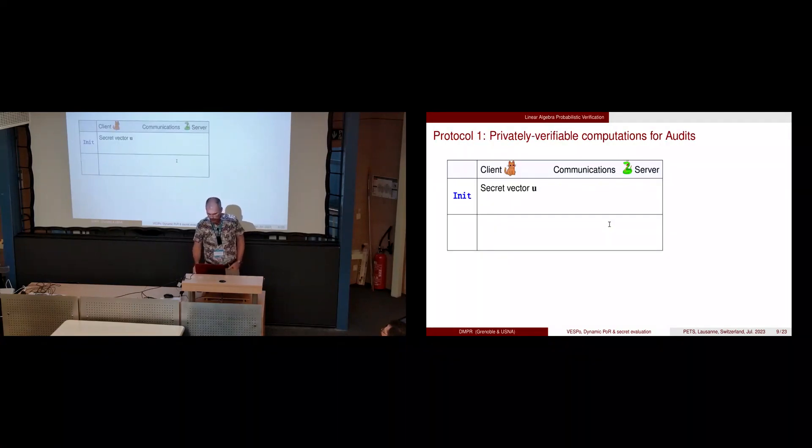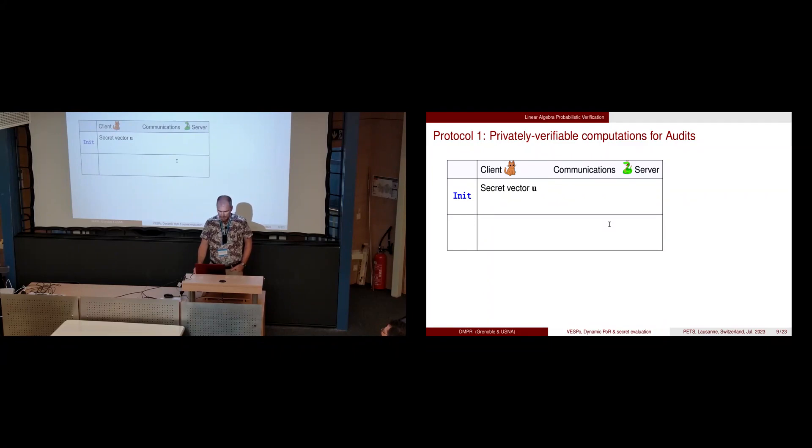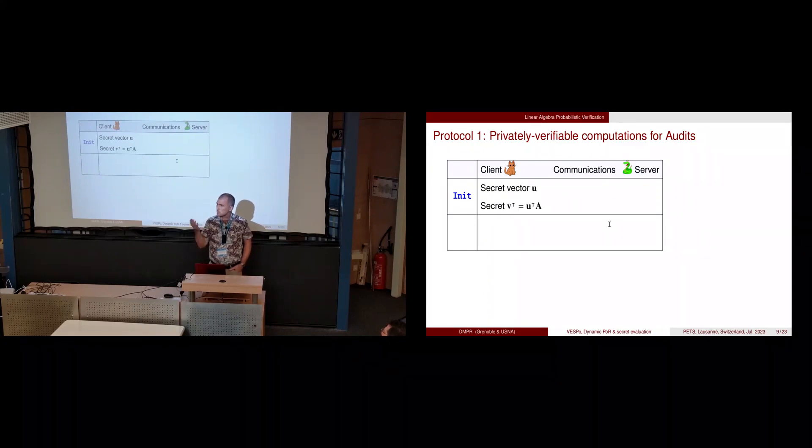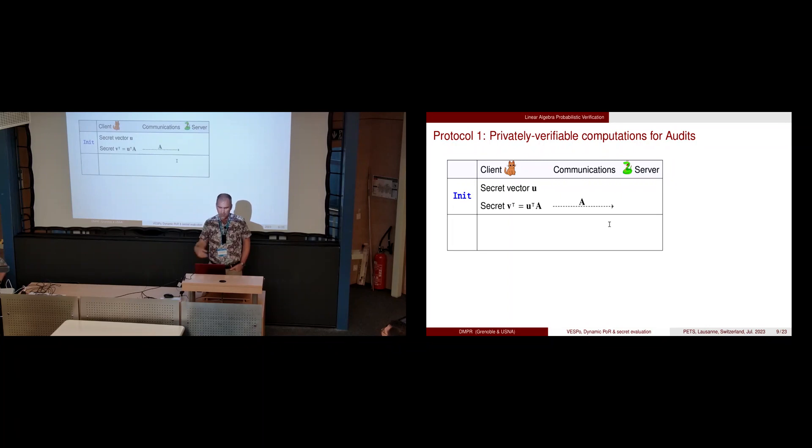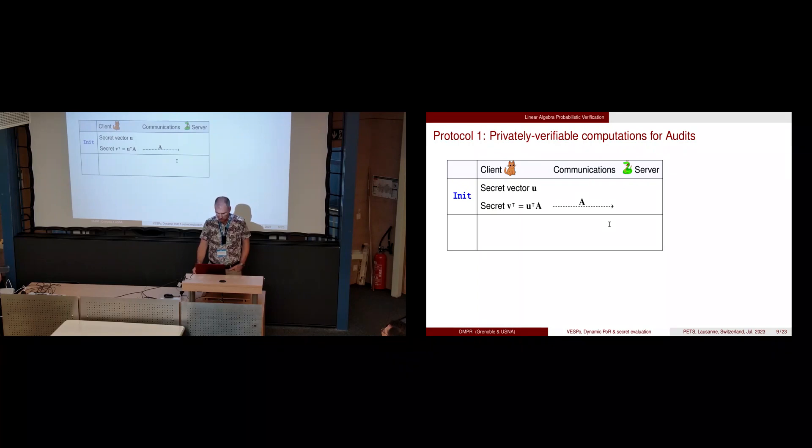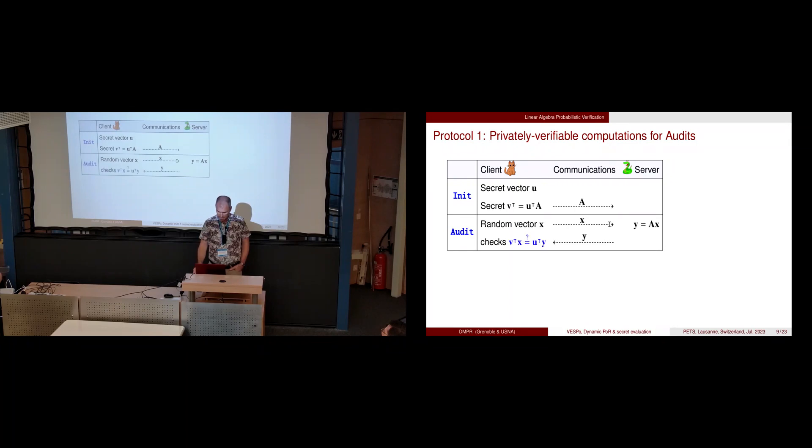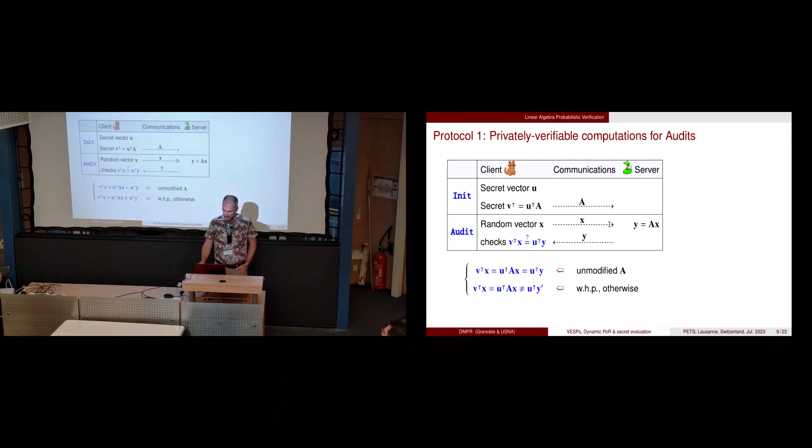More precisely, on the client side we have the secret vector, compute a matrix vector product with this vector, send the data to the server. When we want to check that the data is still there and unmodified, we send another random vector for the other side of the matrix vector product. The server computes a matrix vector product on the other side, and we check the dot products of all the results. If the data is unmodified most probably the output is the same; if modified, the dot products will be different.